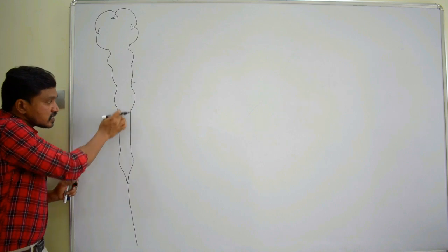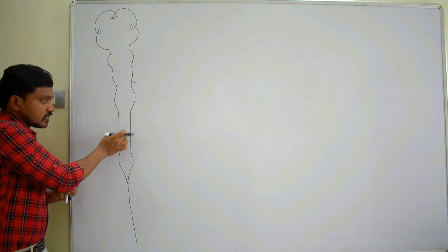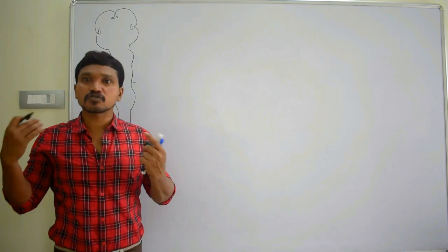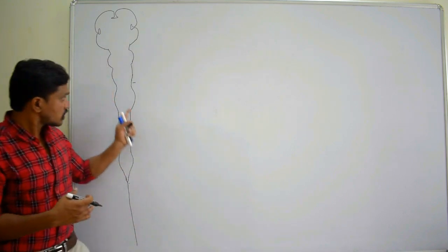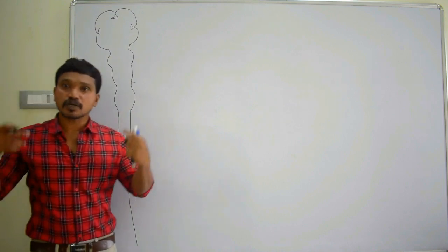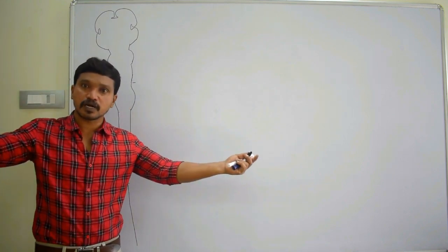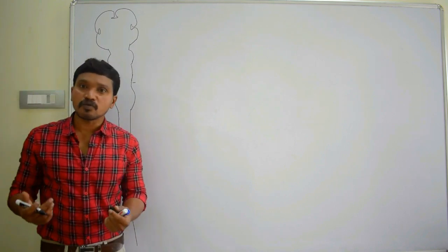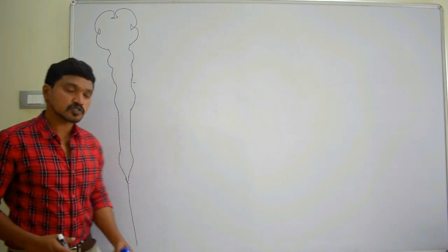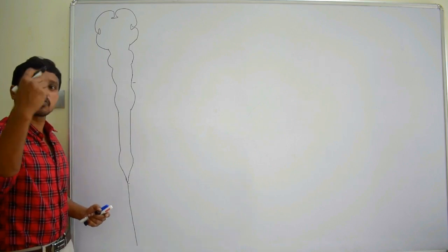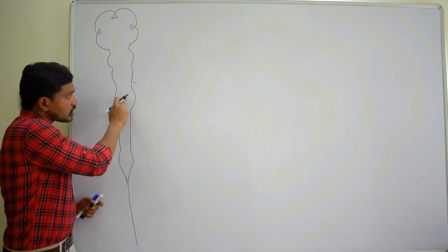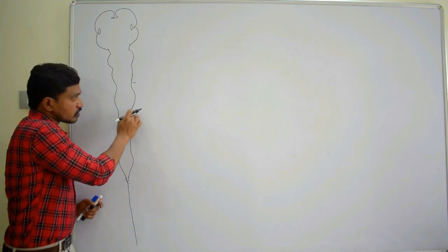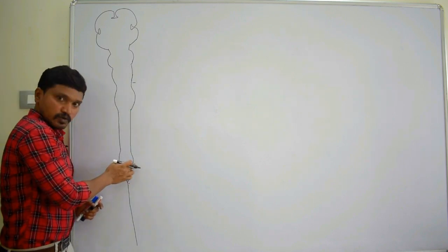Why these enlargements? In the thoracic region, the spinal cord is narrow because fewer neurons are present — it has to supply only to the body wall. But in the cervical region, it has to supply to the body wall and to the upper limbs. In the lower lumbar region, it supplies to the body wall and also to the lower limbs. That is why more neurons are accumulated, resulting in the cervical enlargement and the lumbar enlargement.